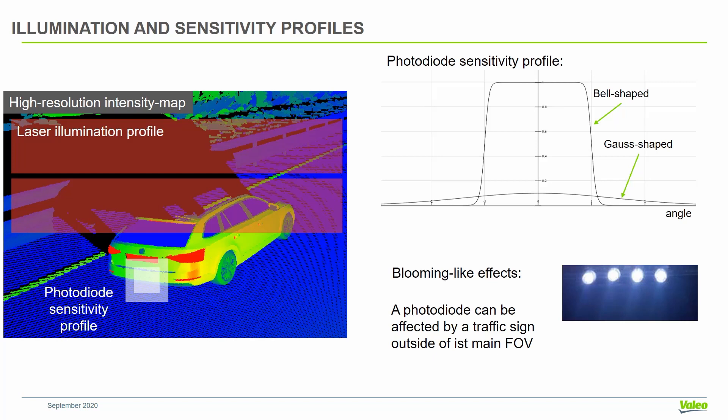With this you can simulate effects like blooming, where a pixel will be affected by a strong signal even if the source of the signal is not directly inside the field of view. For example, if a highly reflective traffic sign generates a lot of signal, this signal will be overflowing into the neighboring pixels.